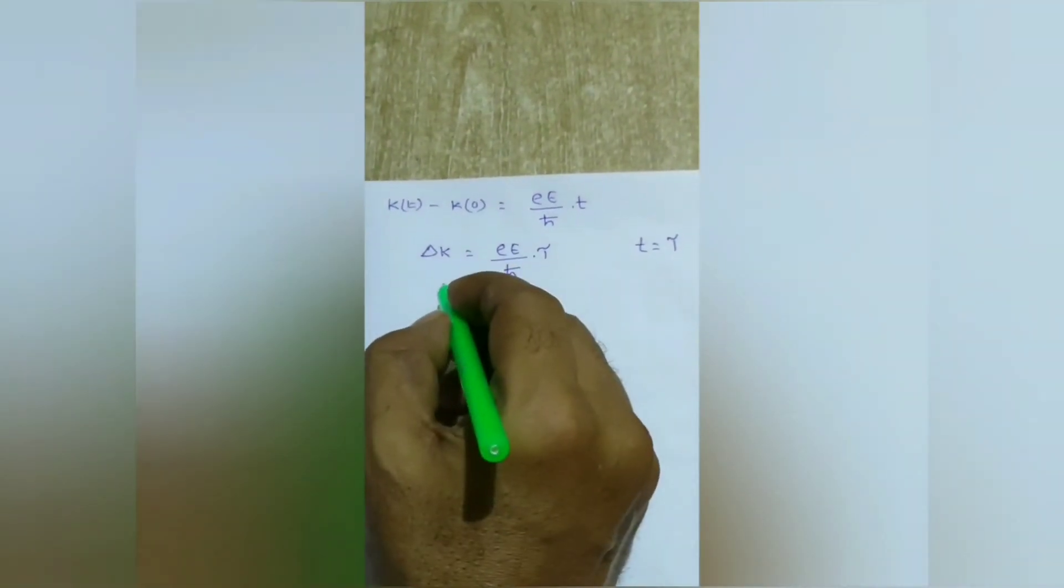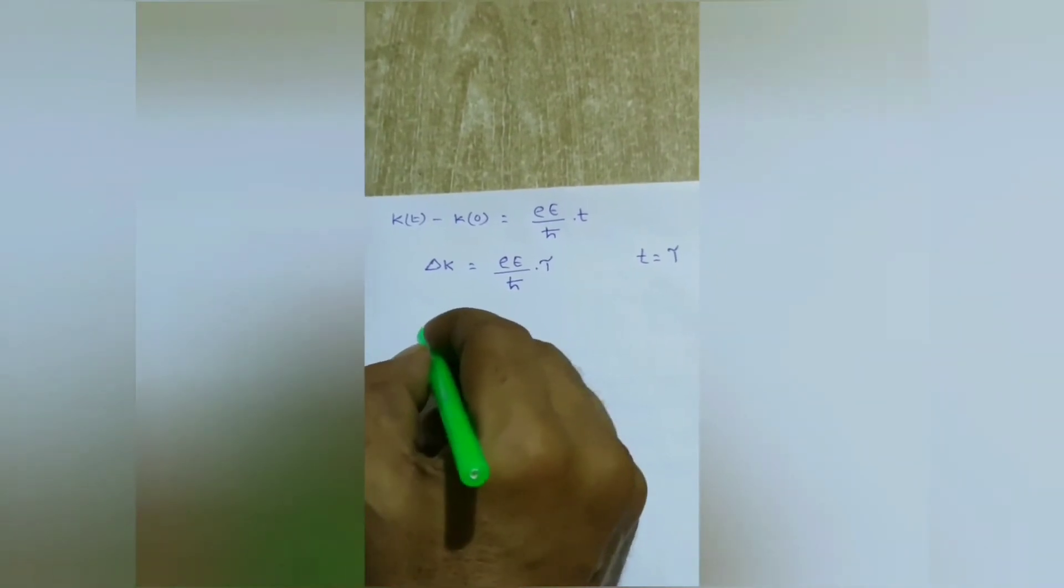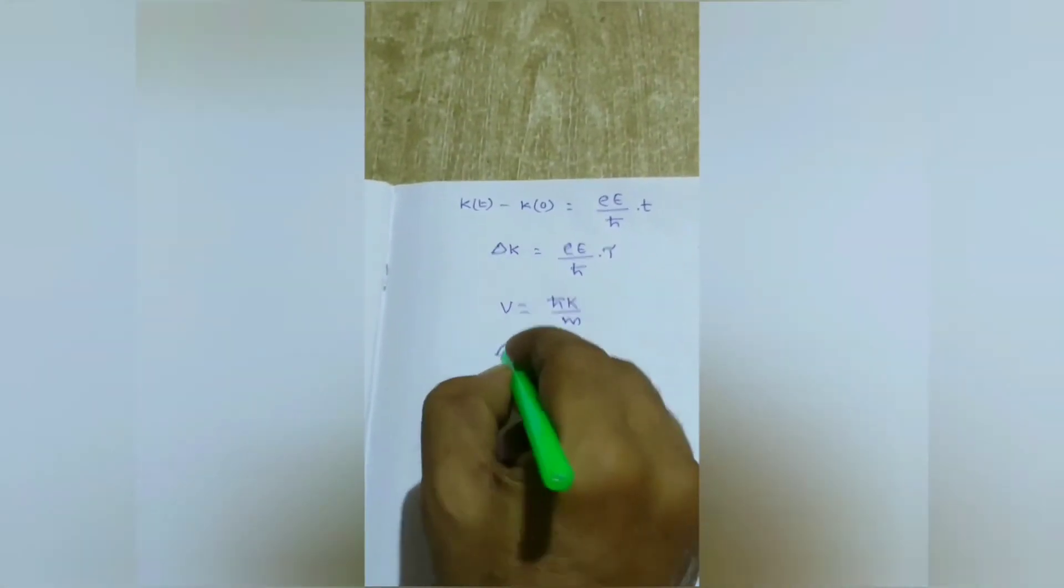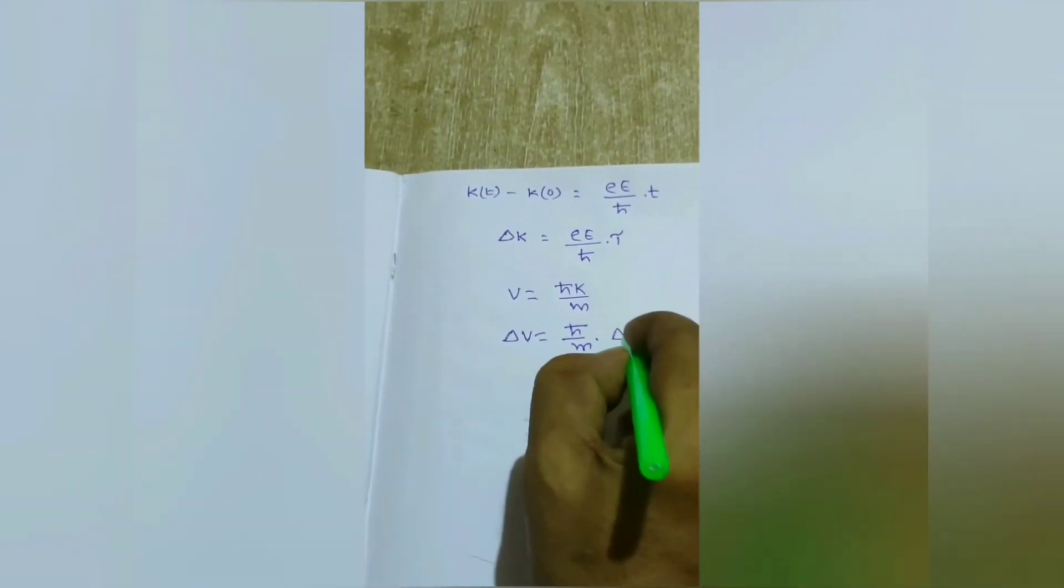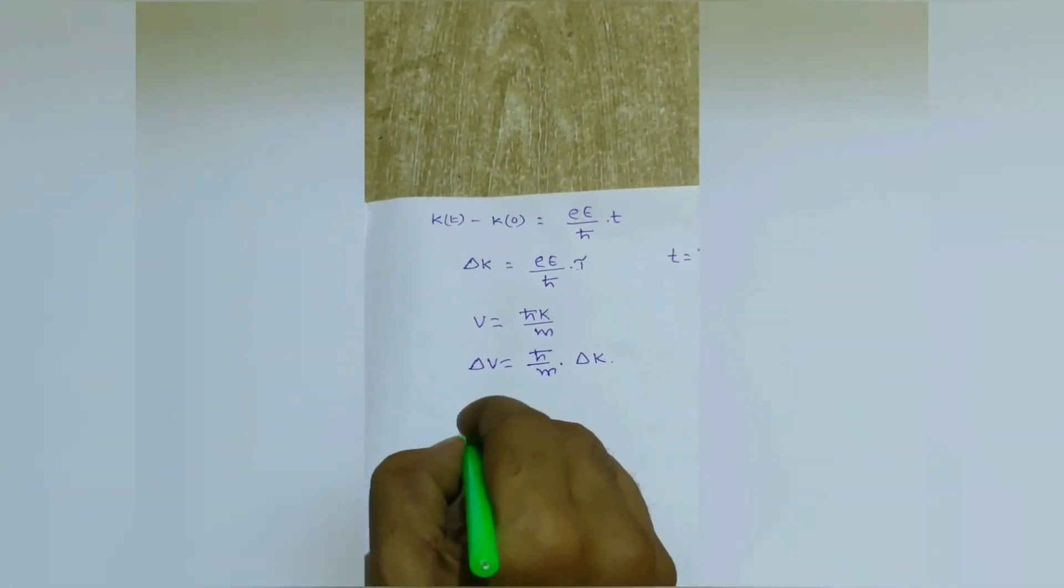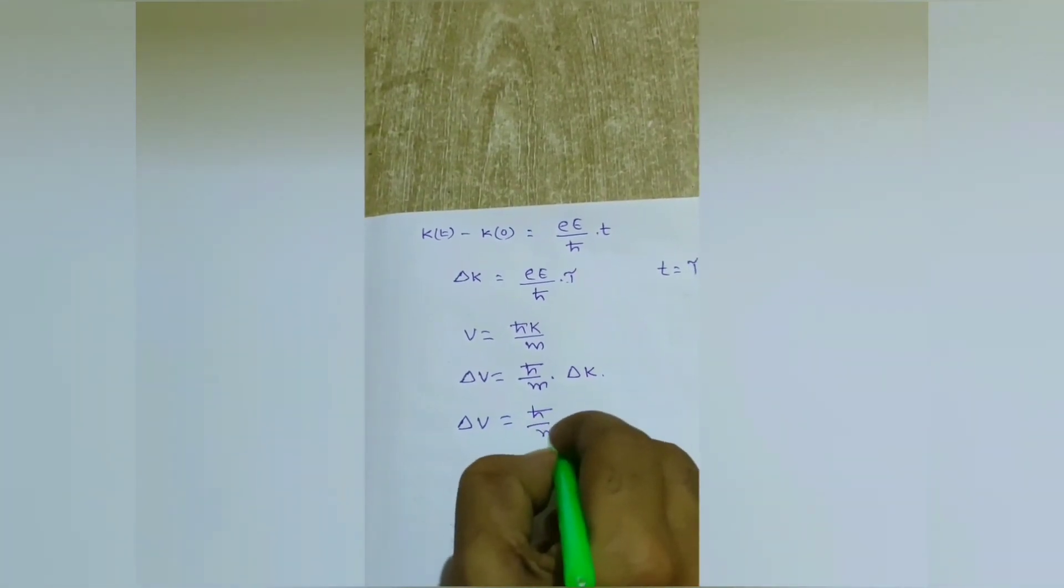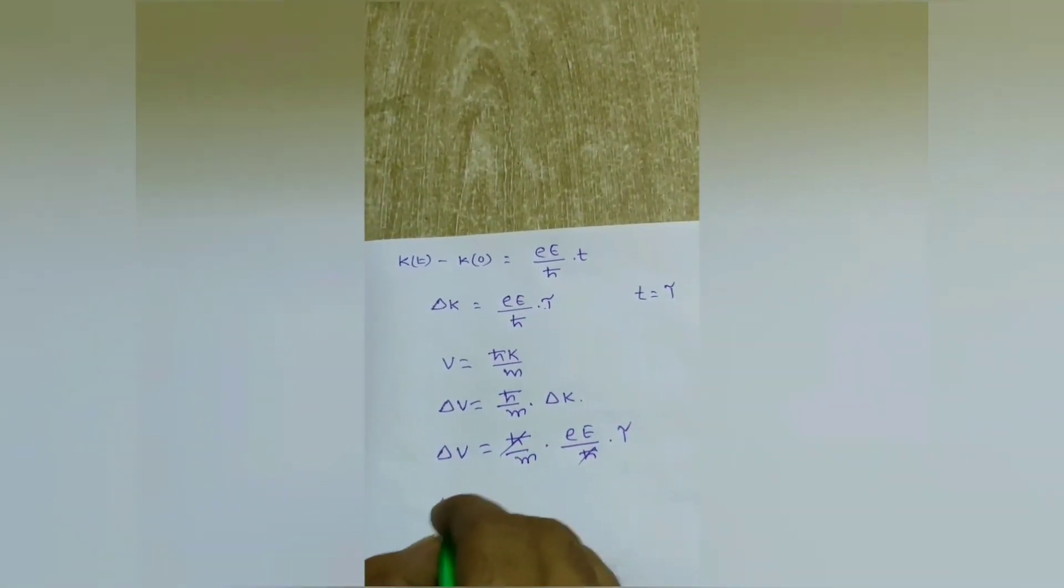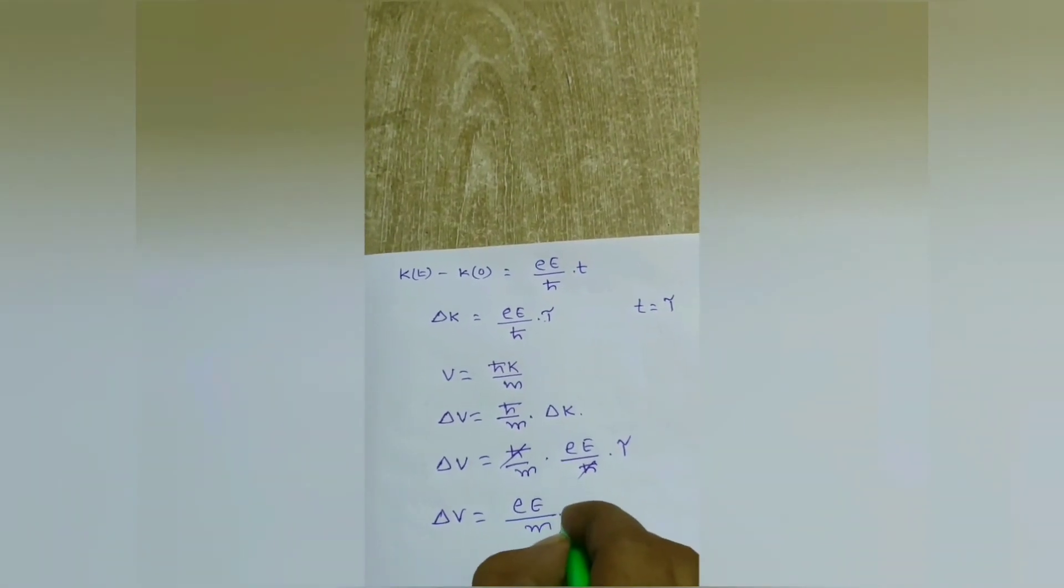From relation between k and v, v = ℏk/m. Therefore, Δv = (ℏ/m)Δk. You know Δk value. Substituting this value into this equation, Δv = (ℏ/m) × (eE/ℏ)τ. Simplifying, Δv = (eEτ/m).